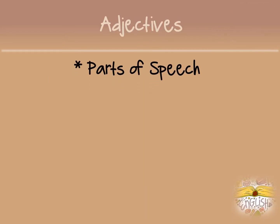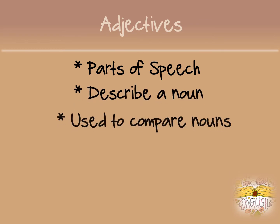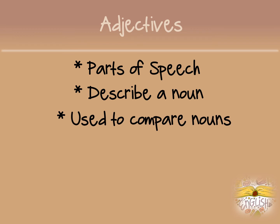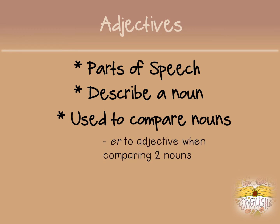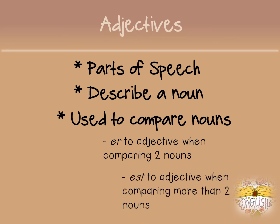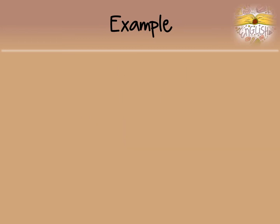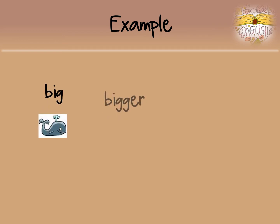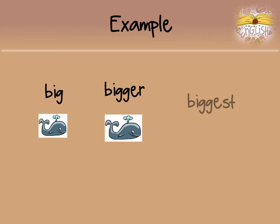Adjectives are parts of speech. Adjectives describe a noun. Adjectives are also used to compare nouns. When you compare two nouns with each other, you add -er to the adjective. If you are comparing more than two nouns, you add -est. For example: big, bigger, biggest.